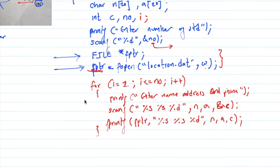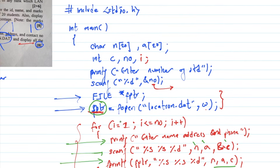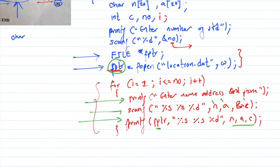The file pointer writes value for i: the name, address is n, a, c. The variable is stored using fptr. With the fptr, the first name is written to the file pointer and written to disk. After the loop, close the file using fclose.